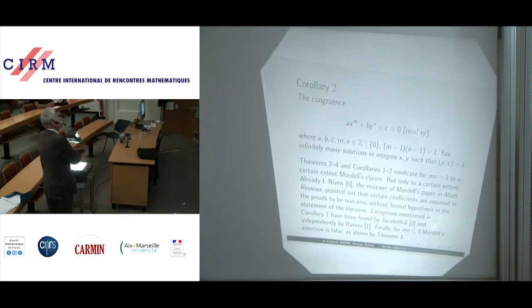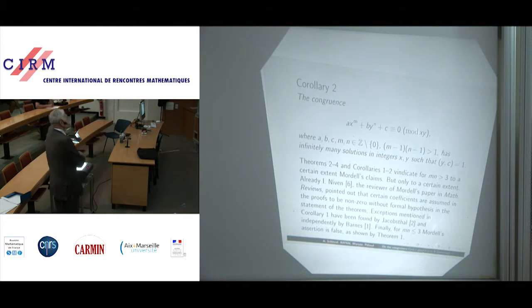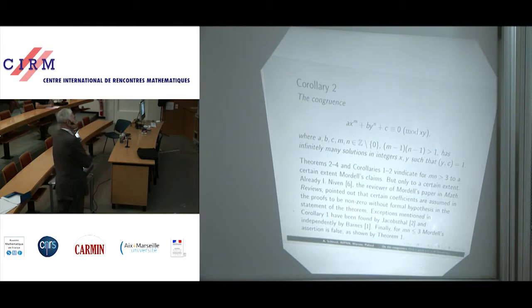Corollary 2: the congruence Ax to the M plus By to the N plus C congruent to 0 mod xy, where A, B, C, M, N are non-zero integers and (M−1)(N−1) is greater than 1, has infinitely many solutions in integers x, y such that y is relatively prime to C. Theorems 2 through 4 and Corollaries 1 and 2 indicate for MN greater than 3, to a certain extent, Mordell's claims — but only to a certain extent.